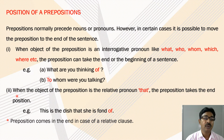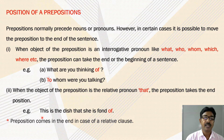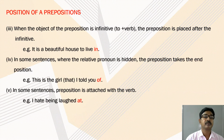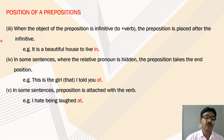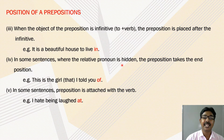When the object of the preposition is the relative pronoun 'that', the preposition takes the end position. Preposition comes at the end in case of a relative clause. Example: 'This is the dish that she is fond of.' When the object of the preposition is an infinitive (to + verb), the preposition is placed after the infinitive. Example: 'It is a beautiful house to live in.' In some sentences where the relative pronoun is hidden, the preposition takes the end position. Example: 'This is the girl that I told you of.'